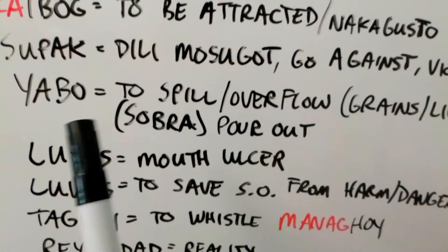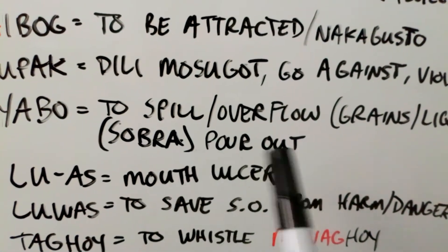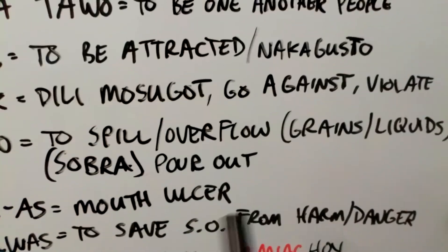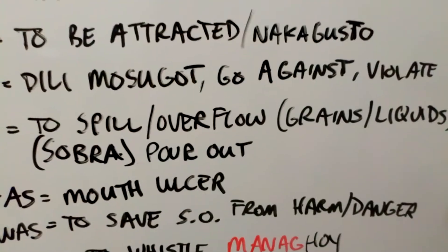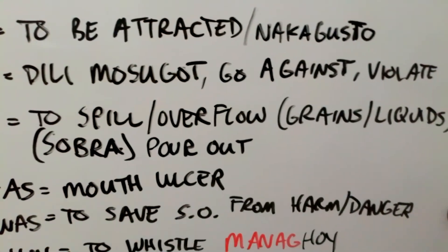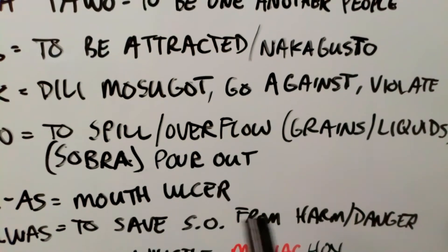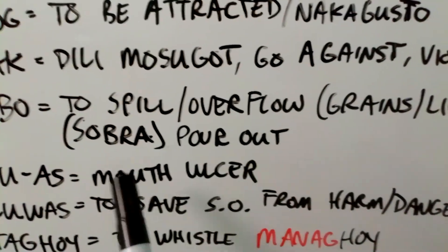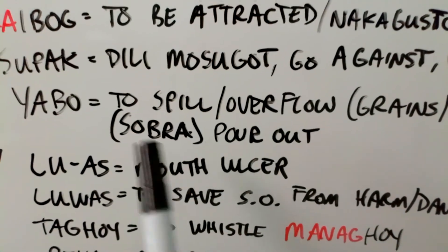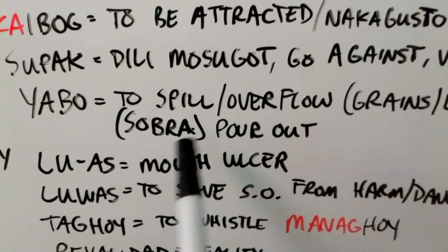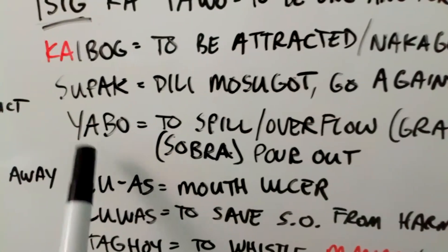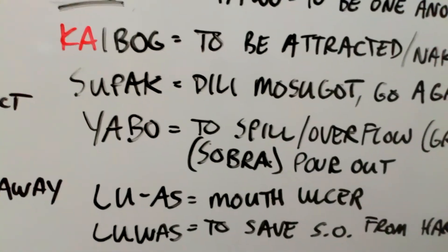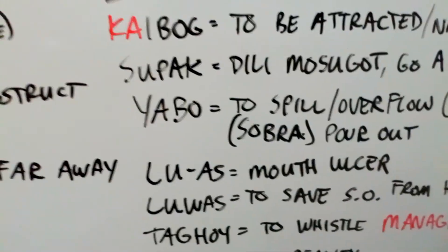The next word, ya bo, means to spill or overflow. You're pouring something out — usually like grains or liquids or solids that are able to overflow. You're pouring out until it's overflowing, and oh no, it's already spilled. Sobra — meaning too much — is the borrowed Hispanic way of saying ya bo. So ya bo is the indigenous way and sobra is the Hispanic way. Both of them are very acceptable. Even though there's both the indigenous and the Hispanic way, they are both acceptable.